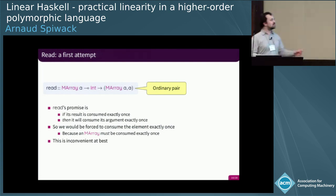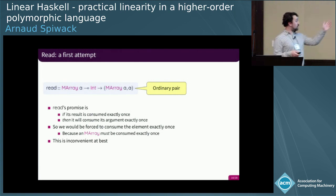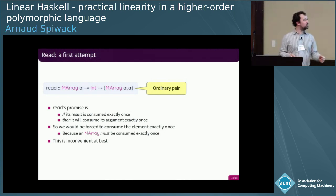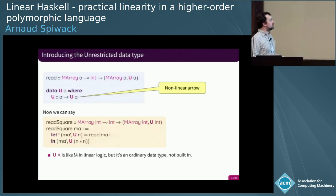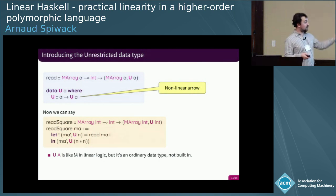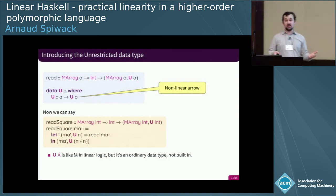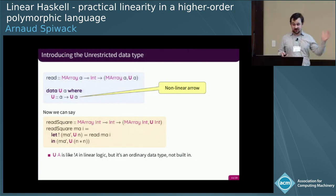Almost. Because what I said is: if I consume the pair exactly once, then I consume the array exactly once. Consuming the array exactly once is my goal — I must consume the pair exactly once, which means consuming both components exactly once. The second component is the element I want to read, and I don't really care about reading it exactly once. So let me introduce a new data type — I call it Unrestricted, and write it 'U' because I'm lazy and slide space is precious. It's just an ordinary data type, but in its type it's storing something that is non-linear. When you pattern match on it, the value in the orange square is unrestricted and you can use it as many times as you want — that doesn't violate the linearity constraint.